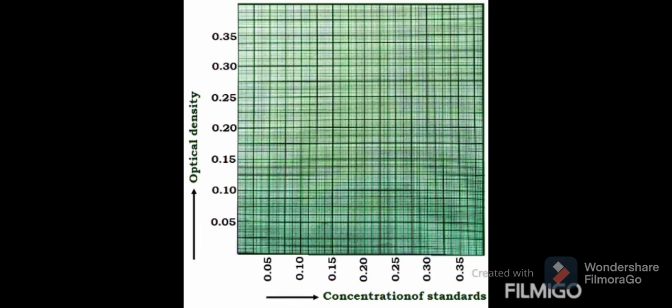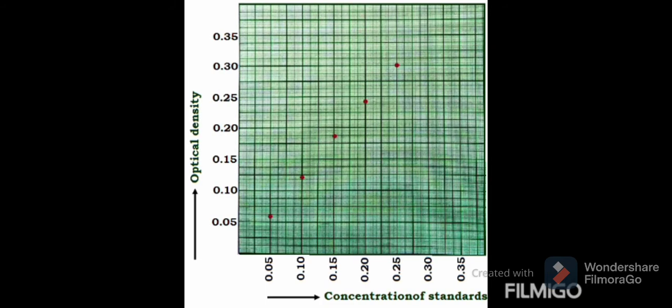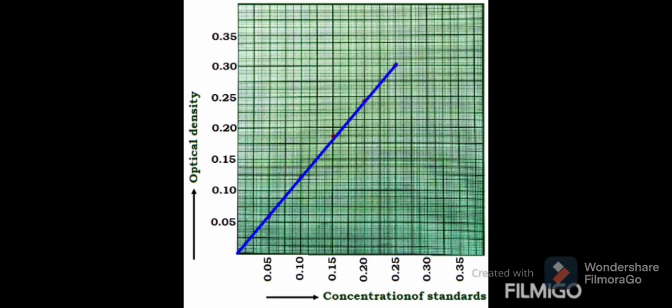Now finding result from graph: the known fixed concentration standards are taken on X-axis and the corresponding ODs are taken on Y-axis. The spots can be made like this and it can be connected using a curve.